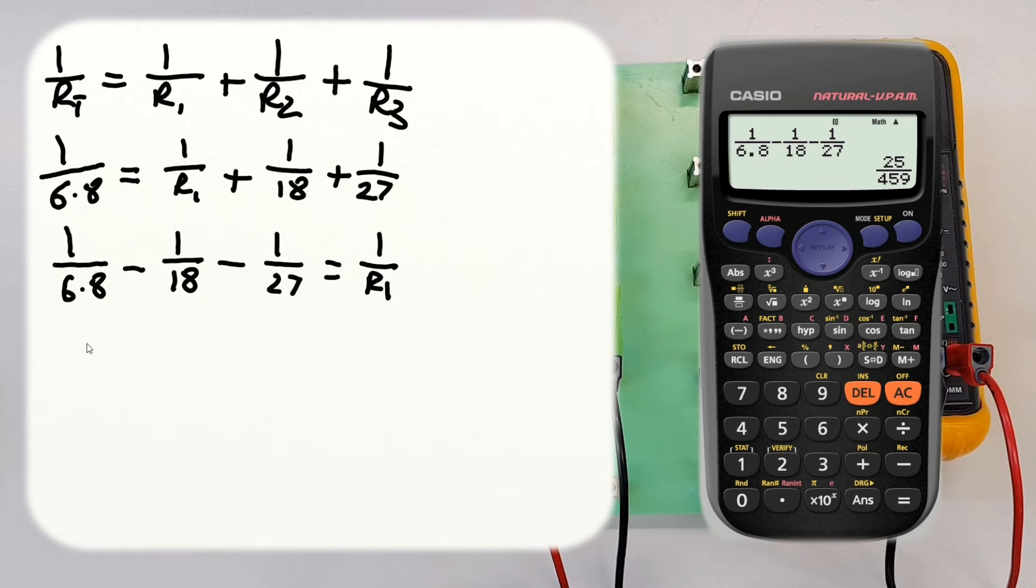So we now know that if we do this side of the calculation we get 25 over 459 and that is equal to... notice that's 1 over R1. So if you remember now how we find the actual value, how we change this from being 1 over R1 to R1, well we just flip both sides of the calculation over. This side becomes R1 divided by 1 which just leaves us with R1 by itself. And this side becomes 459 over 25.